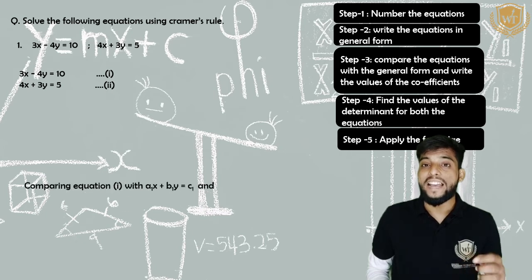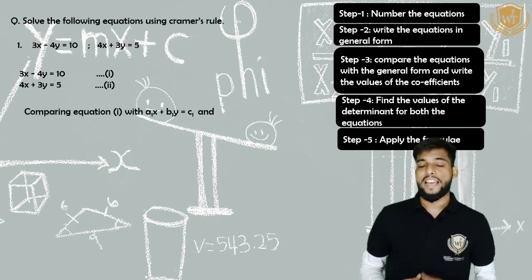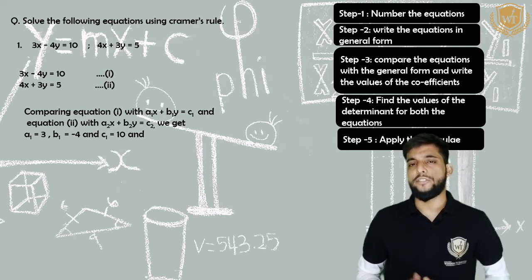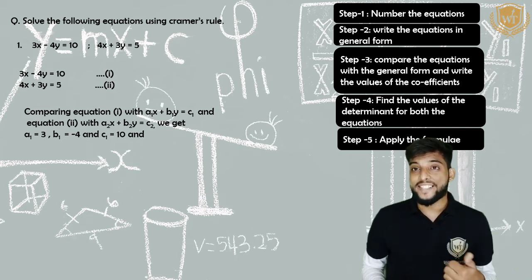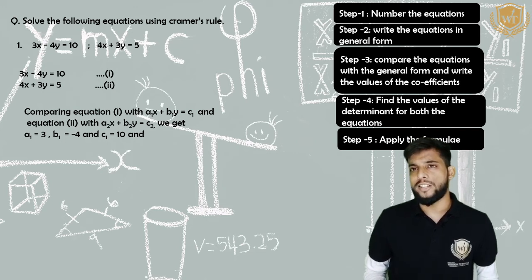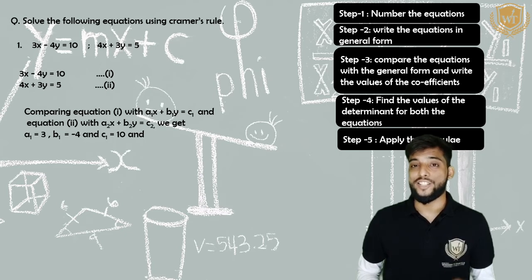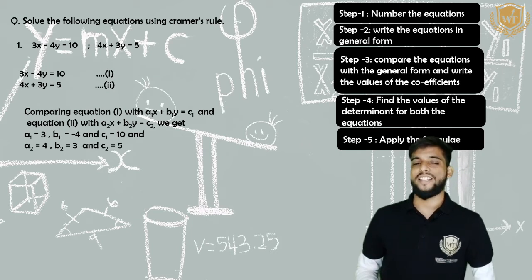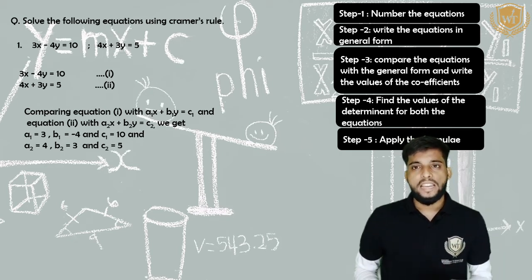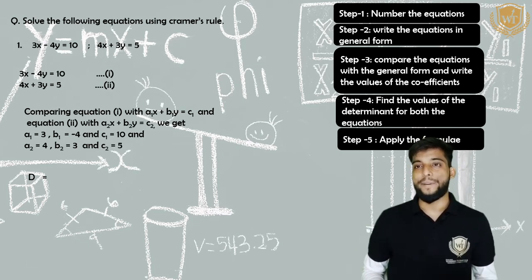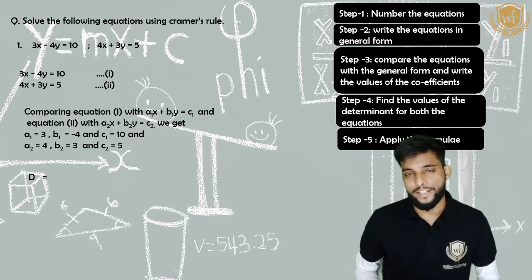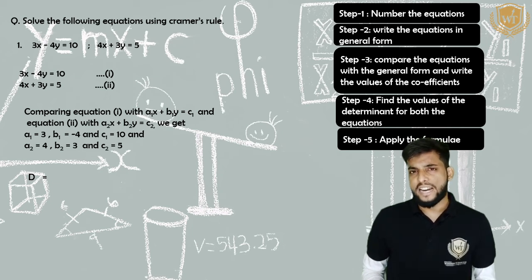Step three: compare equation one with A1X plus B1Y equals C1, and equation two with A2X plus B2Y equals C2. From equation one: A1 equals 3, B1 equals minus 4, C1 equals 10. From equation two: A2 equals 4, B2 equals plus 3, C2 equals 5. Step three is done.